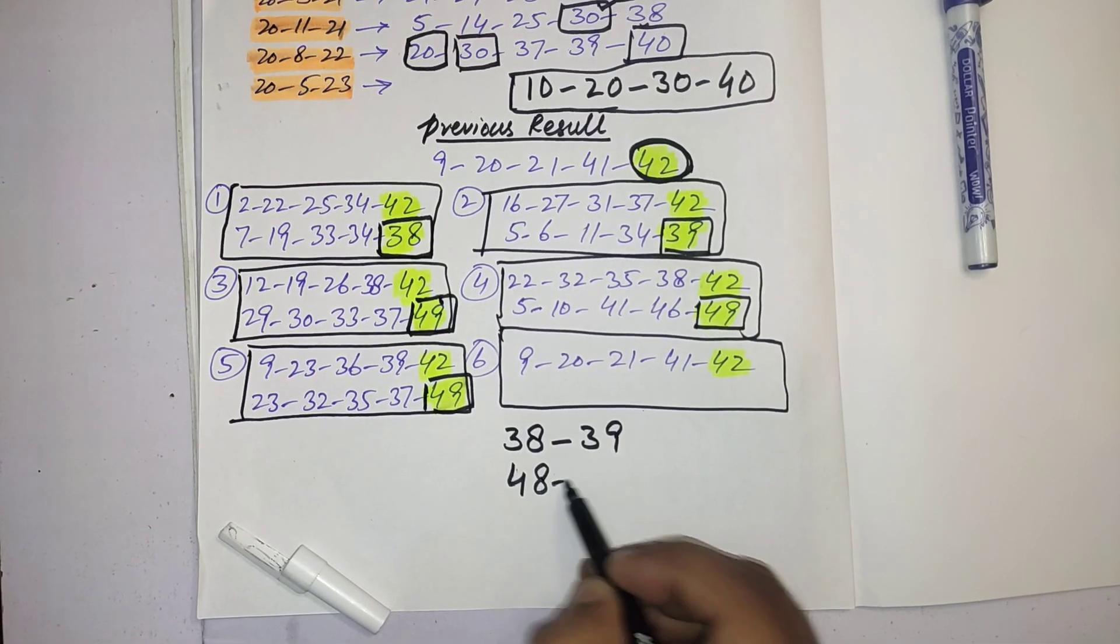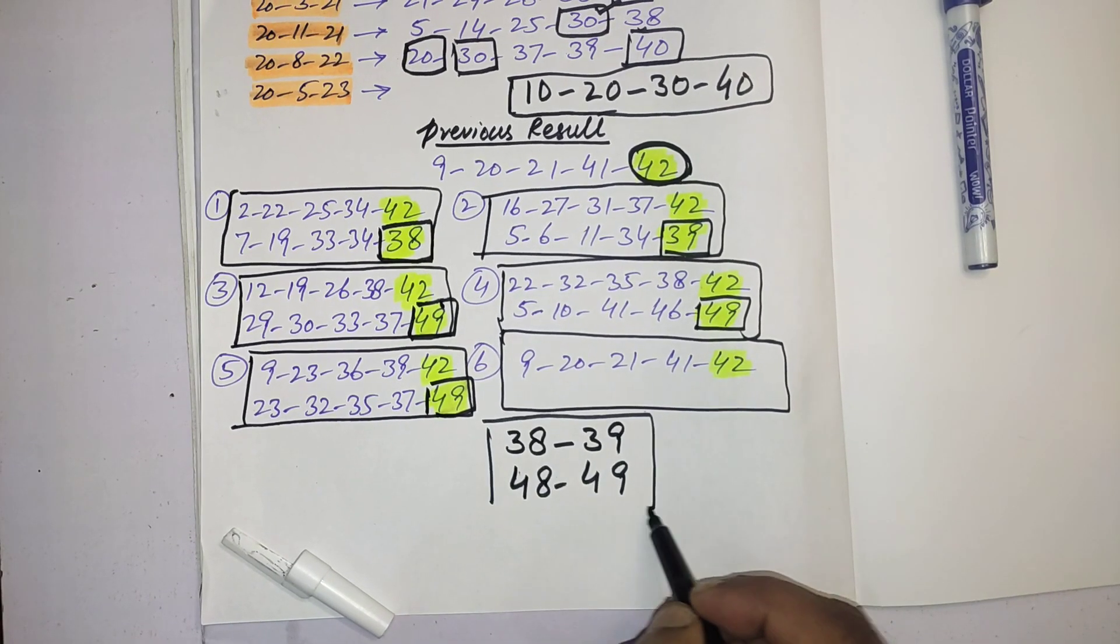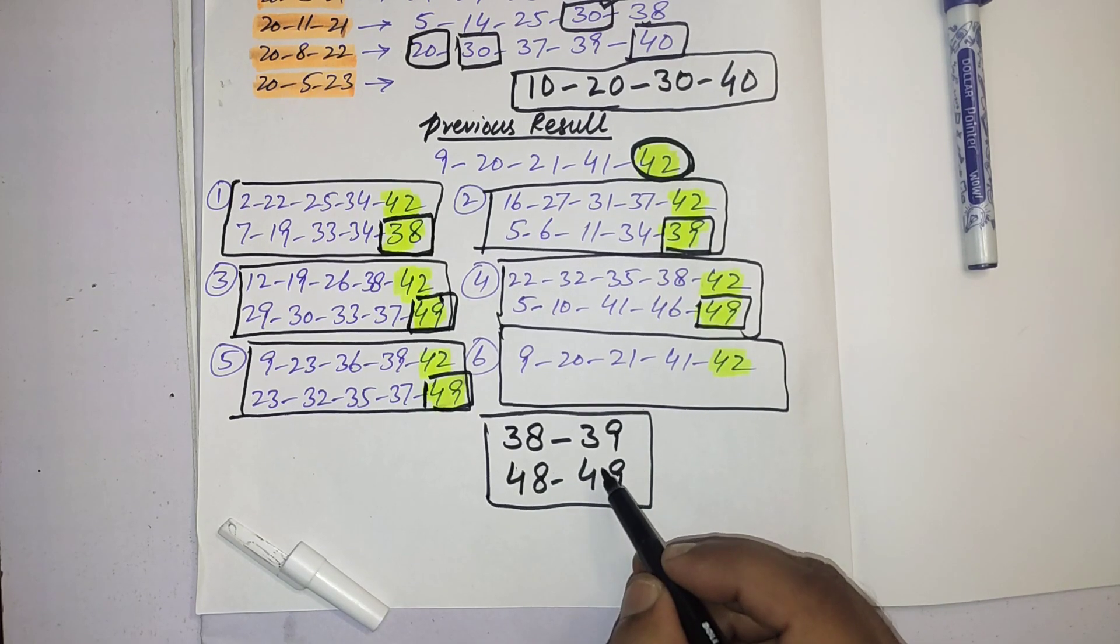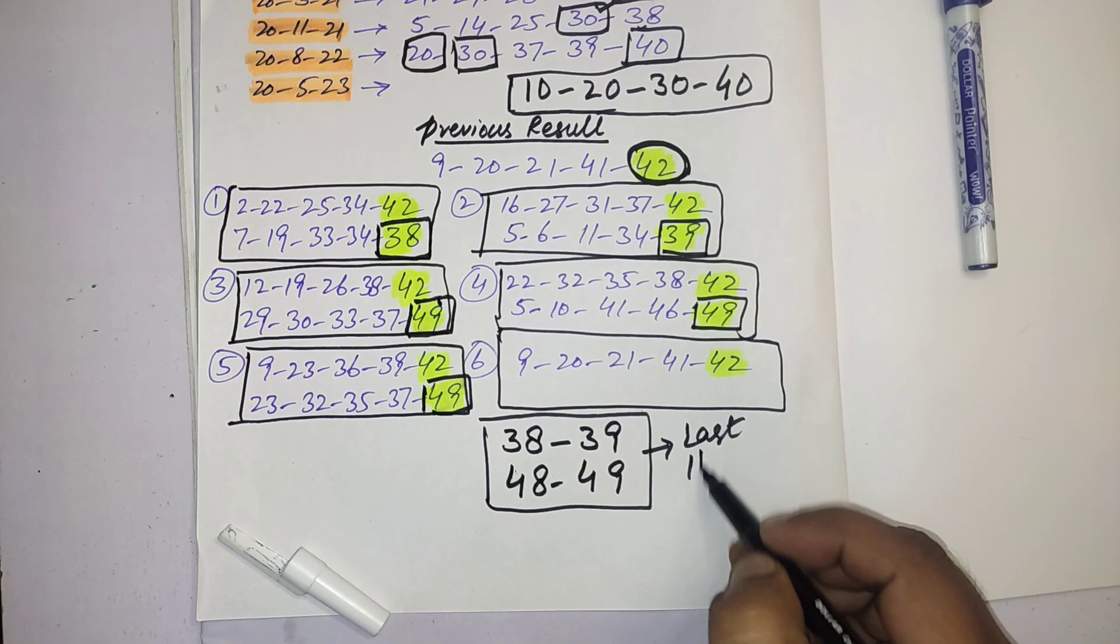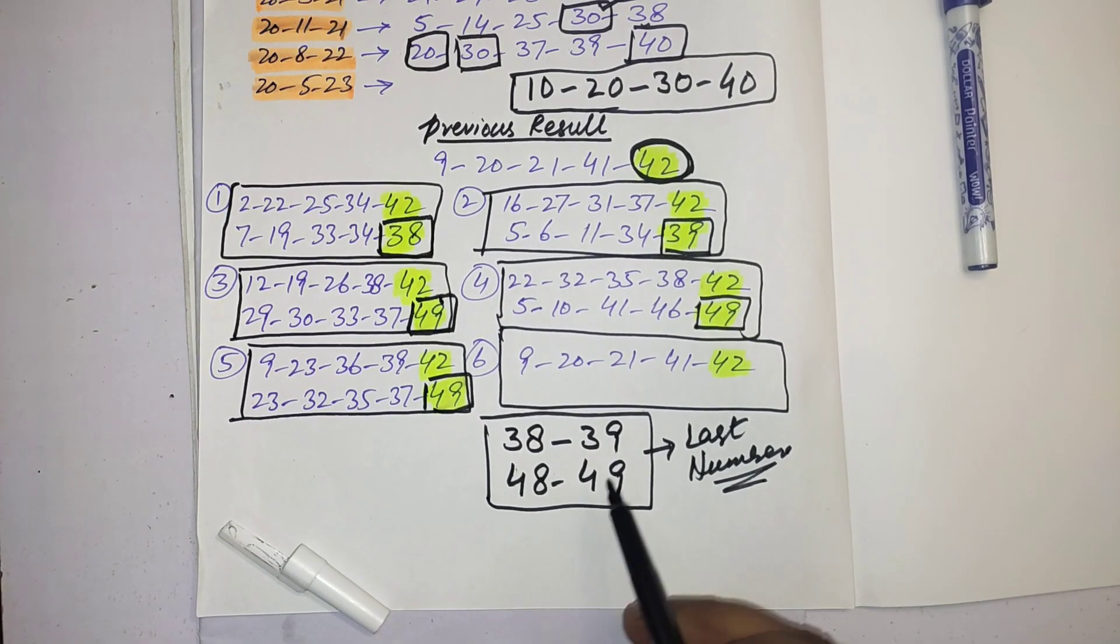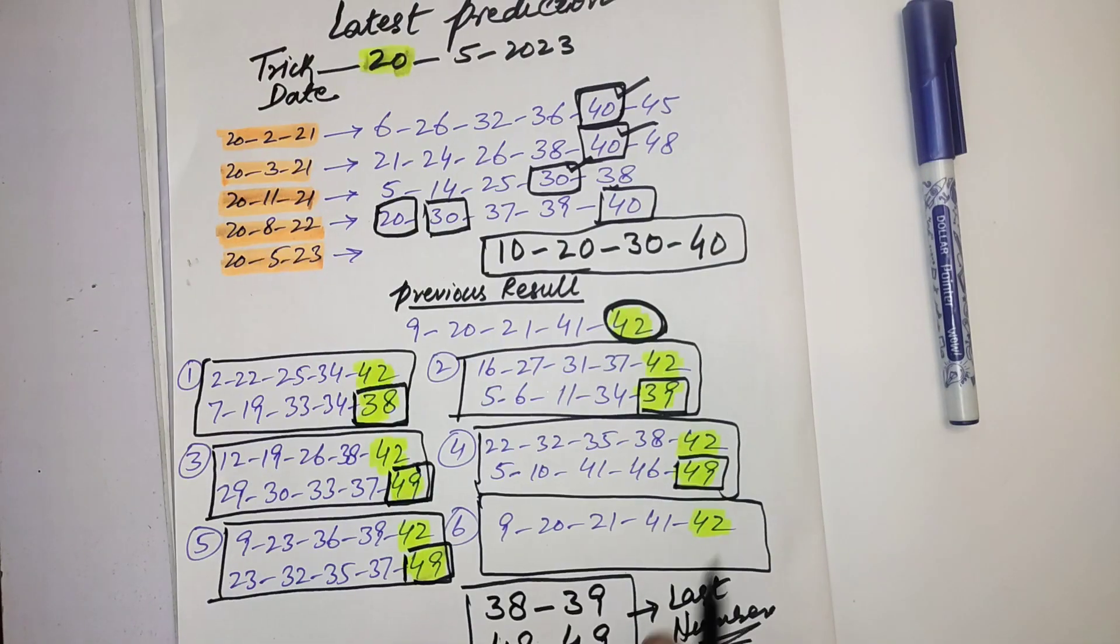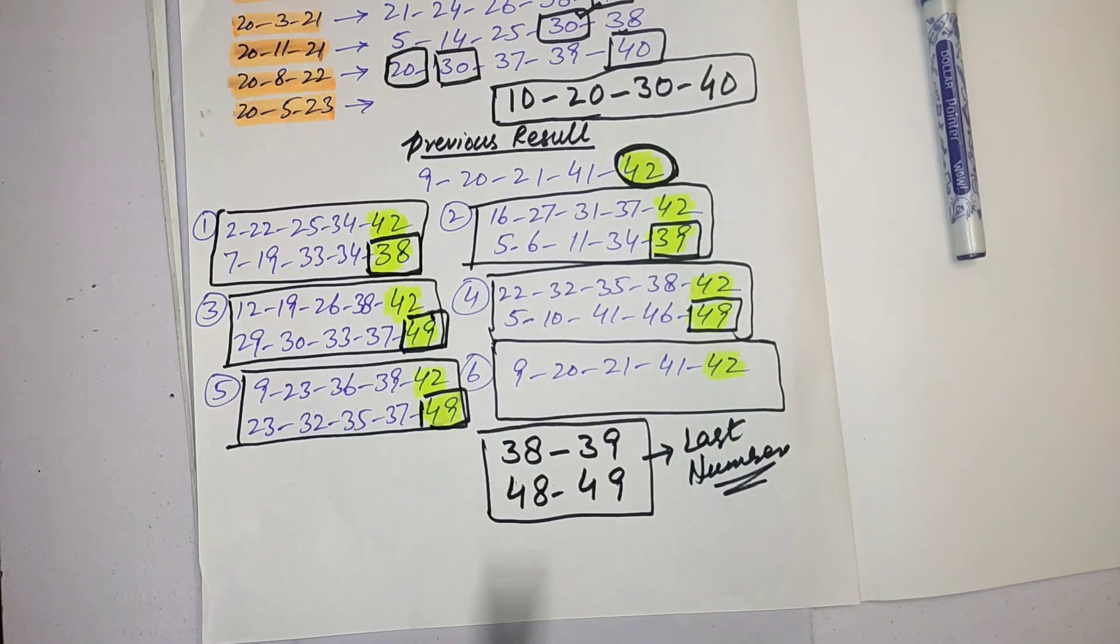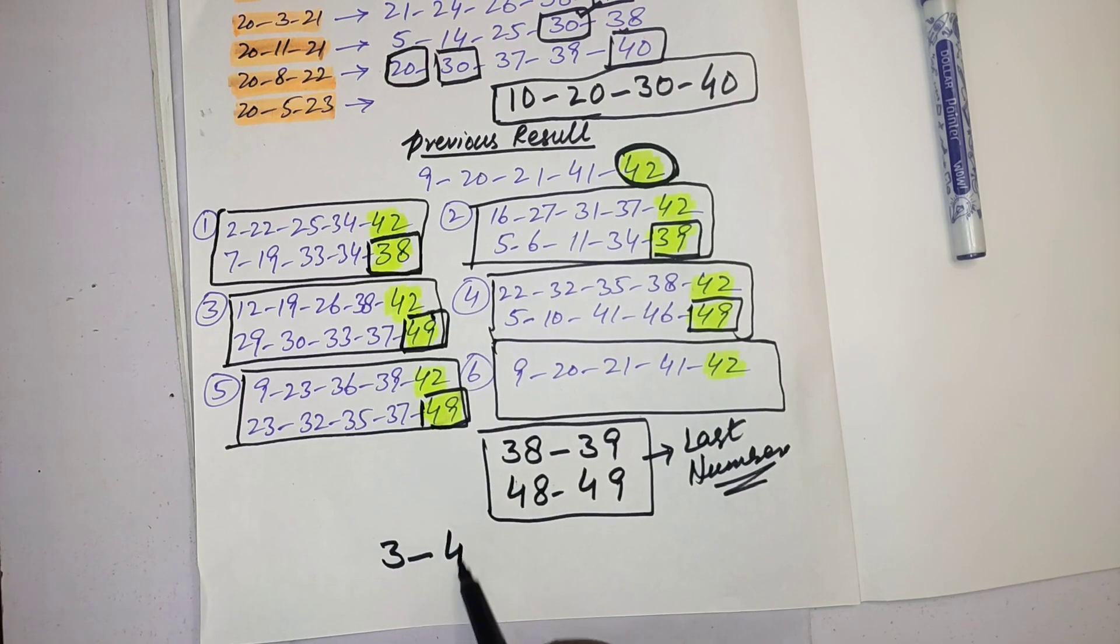48 and 49 last number. You should select any number from here. Last number of the result: 38, 39, 48, or 49. Four numbers. My remaining powerful numbers: 3, 4, 15, 18, 19, 33, 38, and 44.